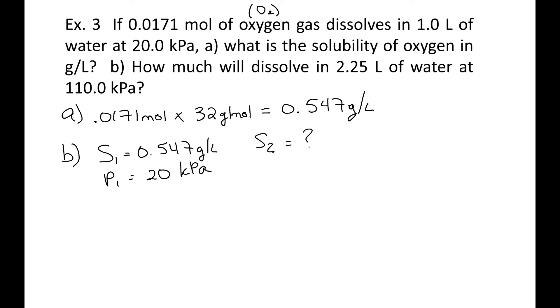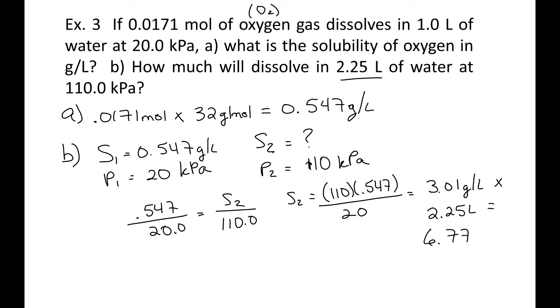Our S2 is what we're trying to find out. Whenever you see the word how much, that means grams. That means we have to figure out the solubility first. And then P2 is 110 kilopascals. So 0.547 over 20, S2 over 110. Cross multiply. So we get 110 times 0.547 all over 20, and this is 3.01 grams per liter. But we don't care about 1 liter. We want 2.25 liters. So if you remember, we just multiply by 2.25 liters, and we get 6.77 grams of O2.